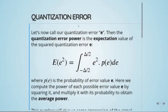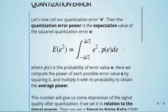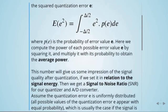We will now take a deeper look into the quantization error, which we call E. The quantization error power is the expectation value of the squared quantization error E, as defined by the integral where P(E) is the probability of the error value E. We compute the power of each possible error value by squaring it, then multiply by its probability to obtain the average power. This number gives us an impression of signal quality after quantization, and when set in relation to the signal energy it becomes the signal-to-noise ratio for our quantizer and ADC.